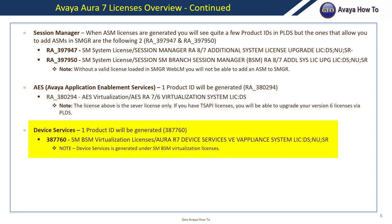For Device Services, one product ID will be generated under ASM-BSM, and this is only for the entitlement. According to Avaya, Device Services will not need a license file like the other products. I will be installing Device Services soon and will document and share that process. I will also be creating videos on how to use PLDS to activate, upgrade, and re-host your licenses from one WebLM to another.